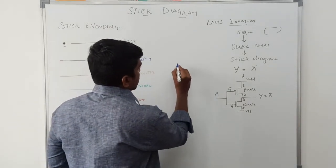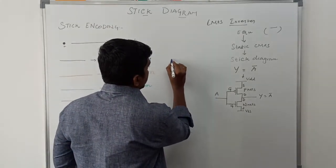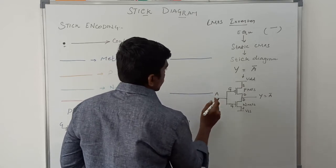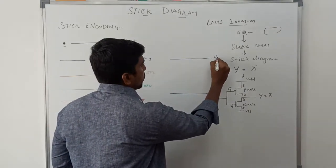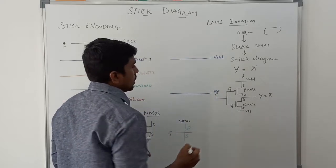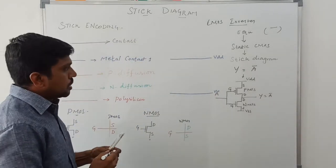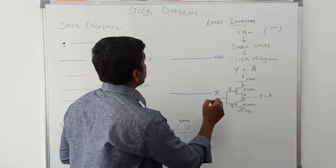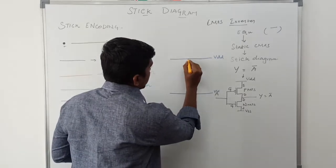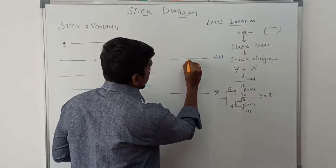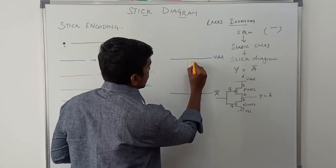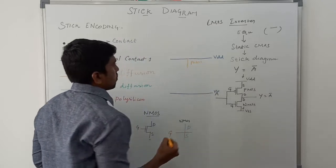First we assign VDD and VSS — VDD and VSS are represented with blue color. Then the first element is the PMOS transistor, which is represented by yellow color.